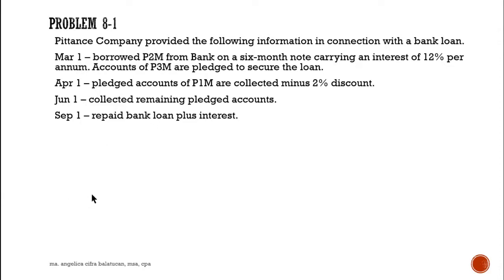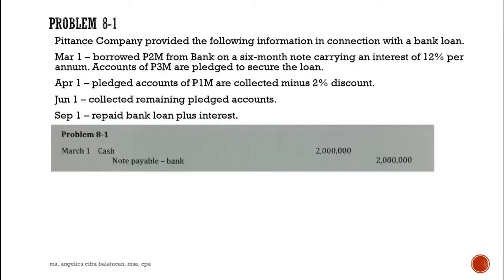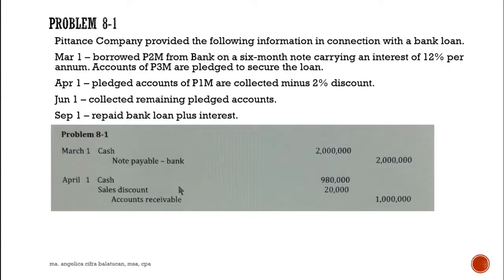The requirement is to prepare the journal entries. For March 1, the entry would be: debit cash for the proceeds of the loan, and credit note payable — bank. There is no discount because this is only a simple interest note. It did not state that there is advance interest. If it were an advance interest note, then we would record a discount on note payable.